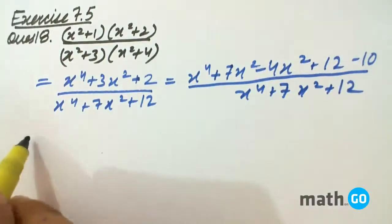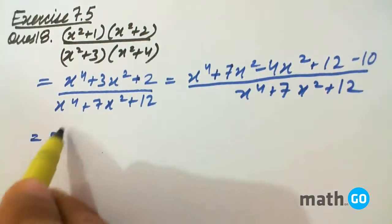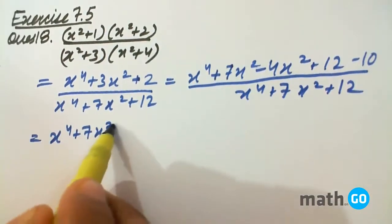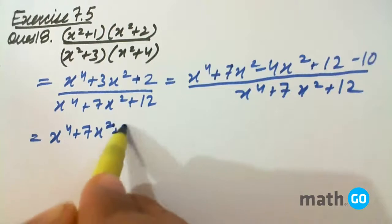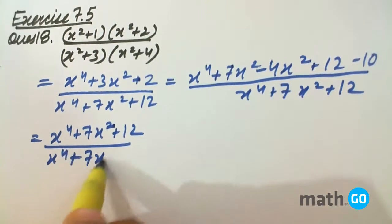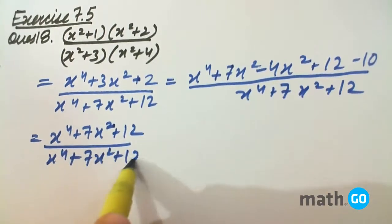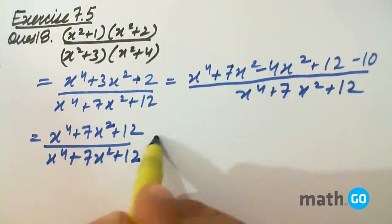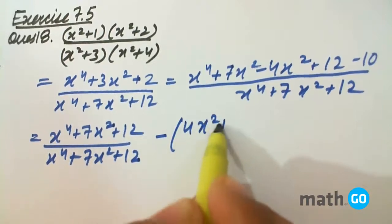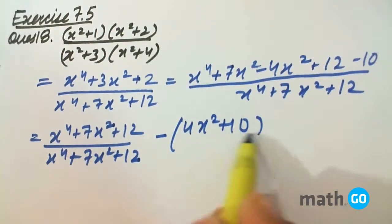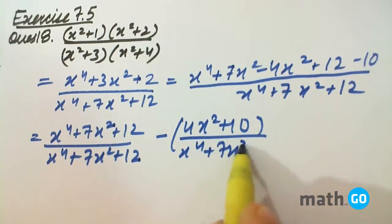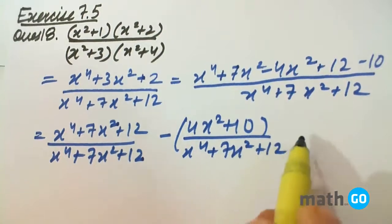Simplifying it further, we will get x to the power 4 plus 7x squared plus 12 upon x to the power 4 plus 7x squared plus 12, minus of 4x squared plus 10 upon x to the power 4 plus 7x squared plus 12.